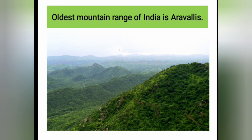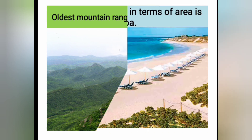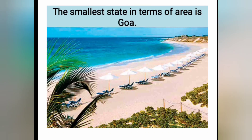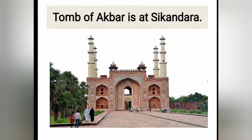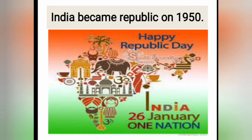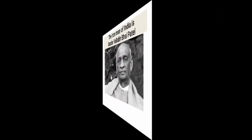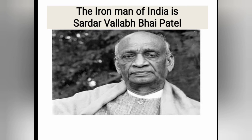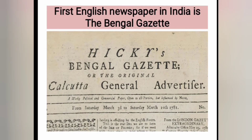The oldest mountain range of India is the Aravalis. The smallest state in terms of area is Goa. The official language of Jammu and Kashmir is Urdu. The Dome of Akbar is at Sikandara. India became a republic in 1950. The Iron Man of India is Sardar Vallabhbhai Patel. And the first English newspaper in India is the Bengal Gazette.